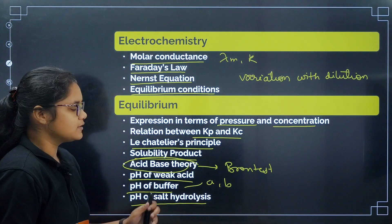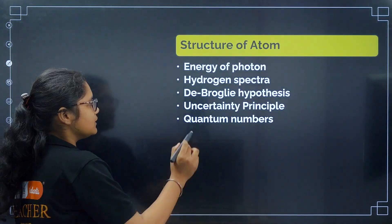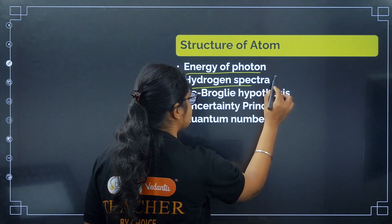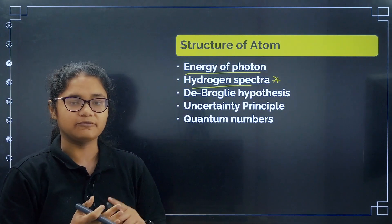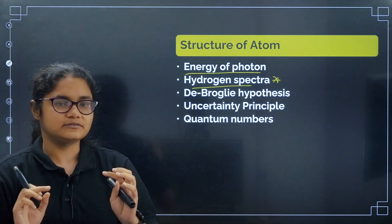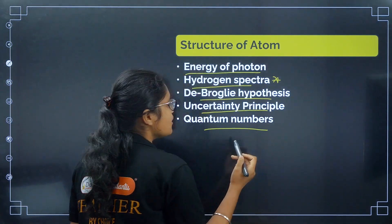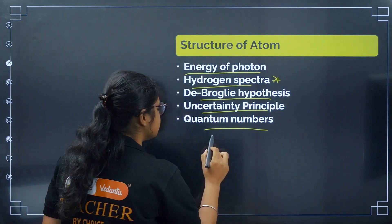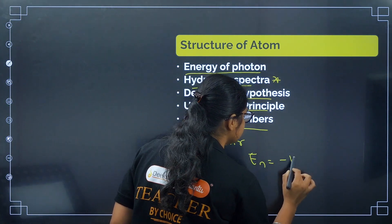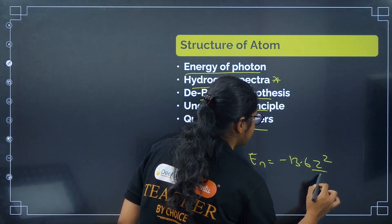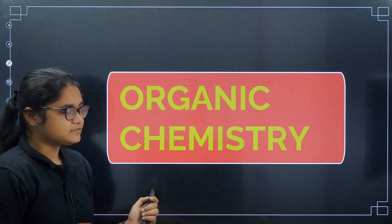Also revise pH of salt hydrolysis formulas. In Structure of Atom, cover energy of a photon, hydrogen spectra — which is very important: Lyman, Balmer, Paschen, Brackett, Pfund series and the energy of transitions. Also cover de Broglie hypothesis, uncertainty principle, quantum numbers, and the Bohr model energy formula: E_n = -13.6 Z² / n².